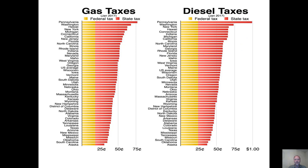Gasoline taxes also vary significantly from state to state. Pennsylvania is over 75% total tax rate including the federal portion and the state portion. At the bottom of the list is oil-rich Alaska, which is not inclined to tax its own oil, and that would also include Oklahoma and, to some extent, Texas. Diesel taxes are a little different than regular gas taxes, going up to a dollar a gallon for Pennsylvania, which is again at the top.